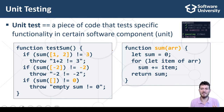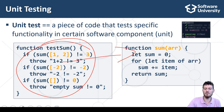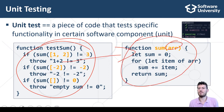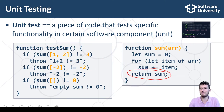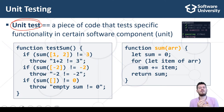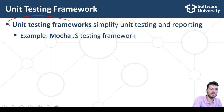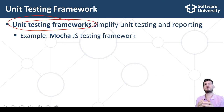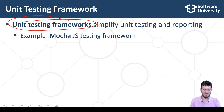Unit tests execute the code with sample input data and entry conditions, and check whether the returned results, exit conditions, and behaviors are correct. Unit testing is usually performed within a unit testing framework which organizes and structures the tests consistently. Unit testing frameworks simplify, structure, and organize the unit testing process, execute the tests, and generate reports.